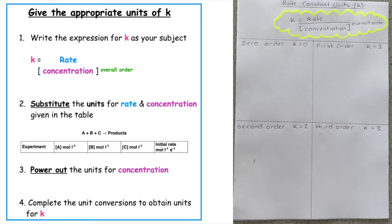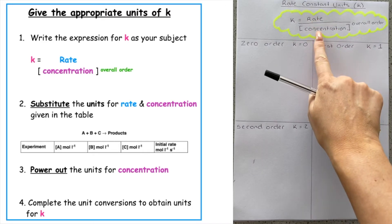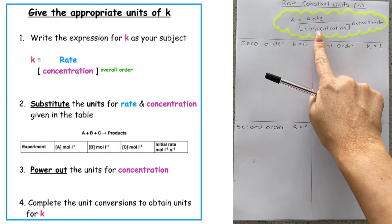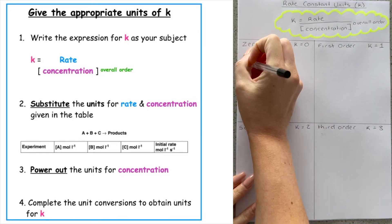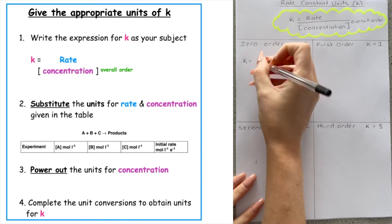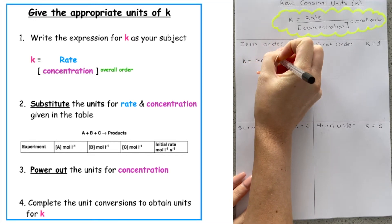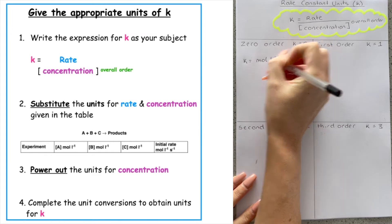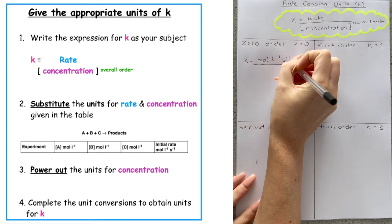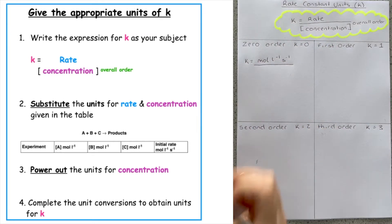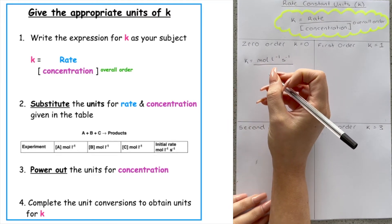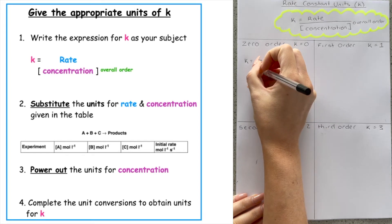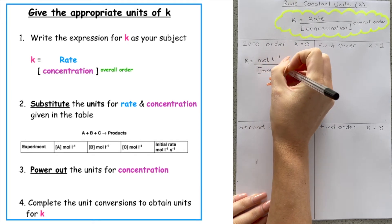Now this is for our units. We then have to substitute the units for rate and concentration, which is given in the table. I've provided you a table, and what we have there is the unit of rate as mole per litre per second, all over the units for concentration, which you can see is given for A, B, and C. Those are my reactants, which is given in mole per litre.